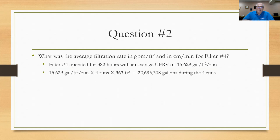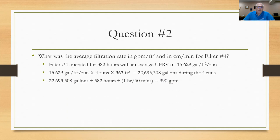Taking 15,629 gallons per square foot per run × 4 runs × 363 square feet gives 22,693,308 gallons produced during the four runs. Dividing by the total hours of operation and then by 60 minutes per hour gives an average operating rate of 990 gallons per minute for filter number four while it was in service.